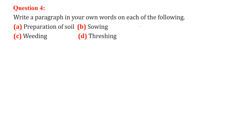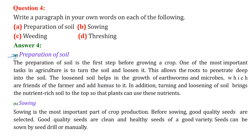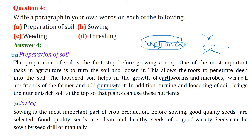Write a paragraph on preparation of soil. Preparation of soil is the first step before we grow a crop. We need to turn and loosen the soil so that roots can penetrate deep into it. Loosened soil also helps in the growth of earthworms and microbes, which are the farmer's friend, and they add humus to it. This turning and loosening also brings nutrient-rich soil to the top so plants can use these nutrients.